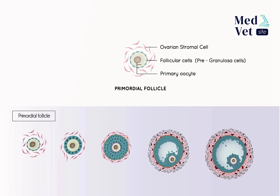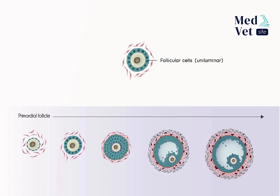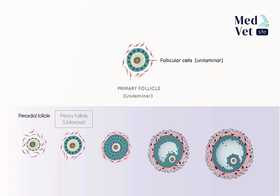These flat follicular cells then change to a cubic shape, initially making up a single layer — the follicle is characterized as unilaminar. From this stage onwards, there are variations in the literature regarding naming conventions for follicles by developmental stage. Using the most frequent classification, at this stage the follicle is classified as a primary follicle.